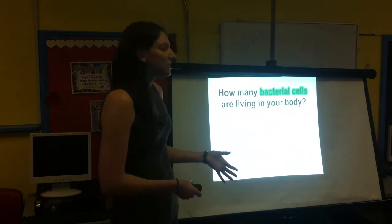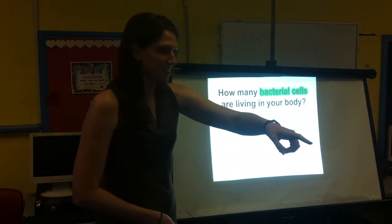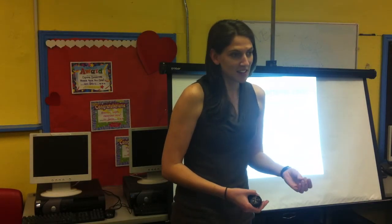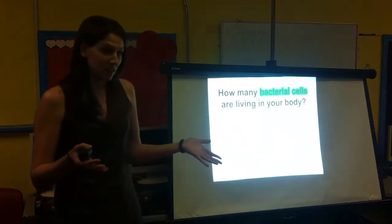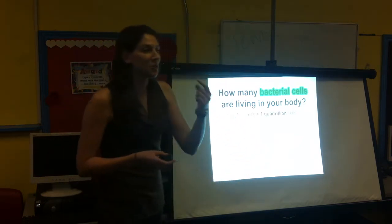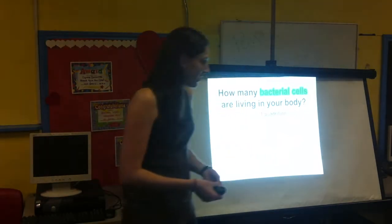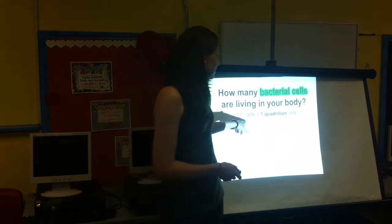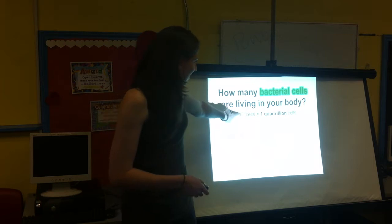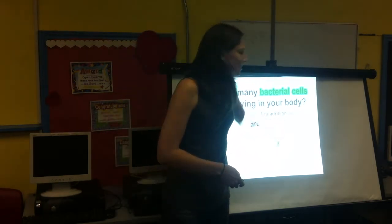How many bacterial cells are living in your body right now? More than a million, or less than a million? More than a million. So actually there are one quadrillion — can everyone say that with me? One quadrillion. That's 10 to the 15th cells. How many zeros do you think are in one quadrillion? About 15. So there are 15 zeros in one quadrillion.